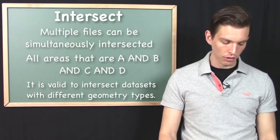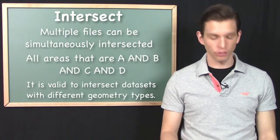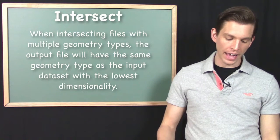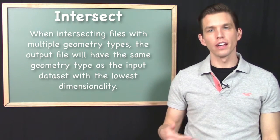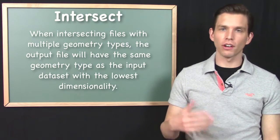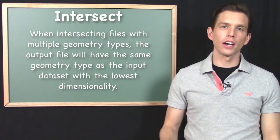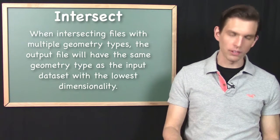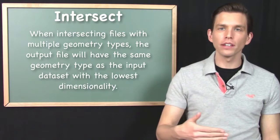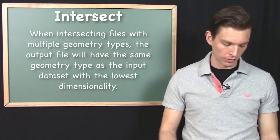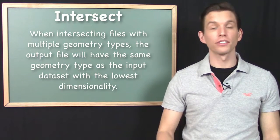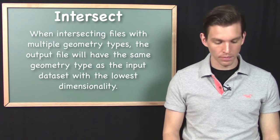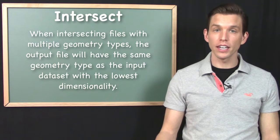If you are using multiple geometry types in a single intersect operation, then the result will be a data file with the same geometry type as that of the lowest dimensionality geometry that was input into the operation. So if you are intersecting points, lines, and areas, the output would be points, because the point file is the lowest dimensionality input. If there are lines and areas being intersected, then the output would be lines.